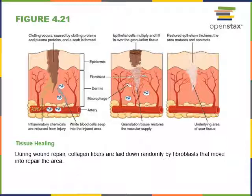The tissues that regenerate easily include skin, most epithelial tissues, connective tissue proper, and bone. Muscle and cartilage regenerate poorly. Some tissues will not fully regenerate and will instead be replaced with scar tissue — for example, dense connective tissue will be laid down to replace cardiac muscle tissue or nervous tissue that has been damaged and cannot regenerate. This process of replacing damaged tissue with scar tissue is called fibrosis.